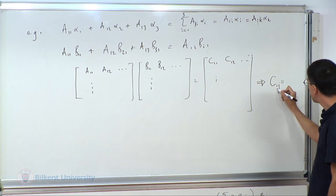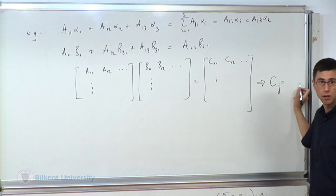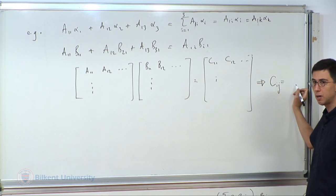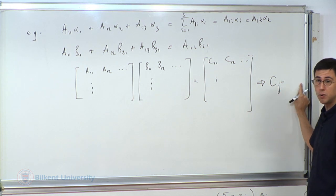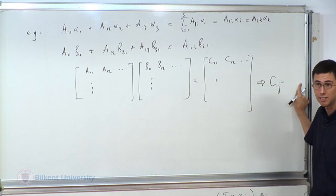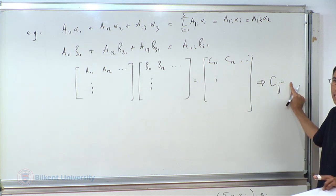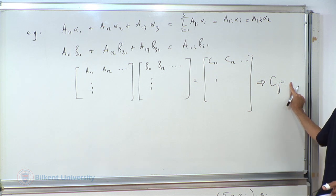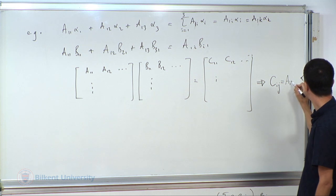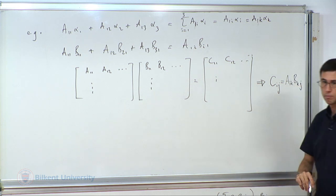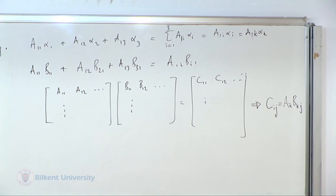The result is Cᵢⱼ = Aᵢₖ Bₖⱼ, where k is the dummy summation index. A numerically wrong expression would be Aₖᵢ Bₖⱼ — that corresponds to Aᵀ multiplying B, not A multiplying B, so it means something else. An expression that violates the rules of the summation convention would be Aᵢᵢ Bᵢⱼ, because i appears three times, which makes the meaning unclear — that is precisely why the rule states no index may appear more than twice. Alternatively, Cᵢⱼ = Aᵢₘ Bₘⱼ is equally correct — m is just another dummy index.